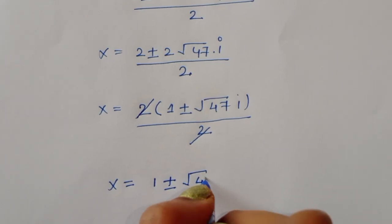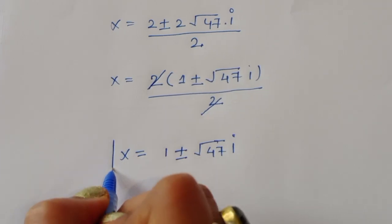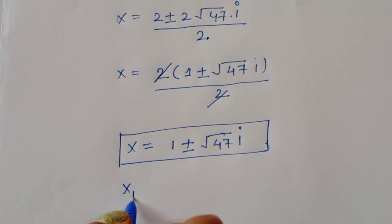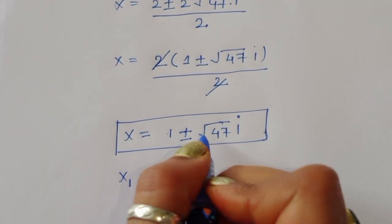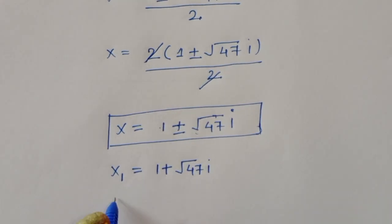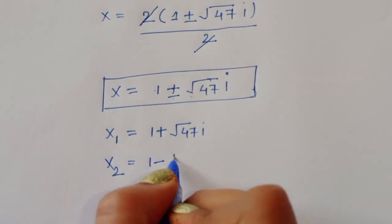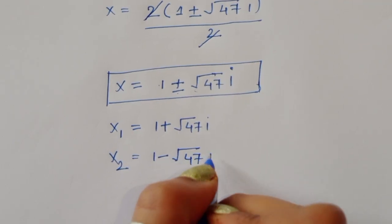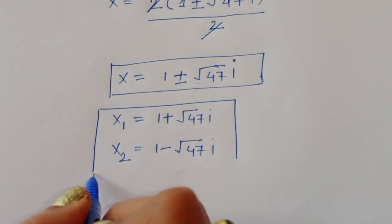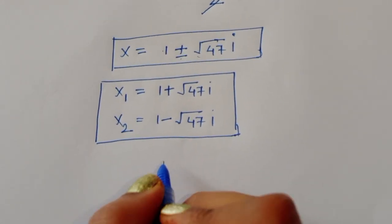So the value of x1 is 1 plus square root of 47 i, and the value of x2 is 1 minus square root of 47 i. Now we need to find the values of y1 and y2 using equation 2.